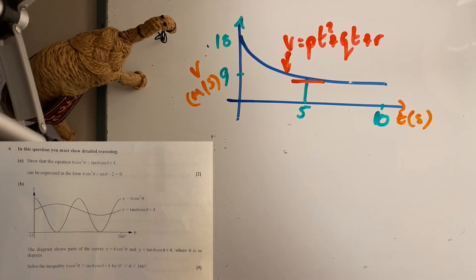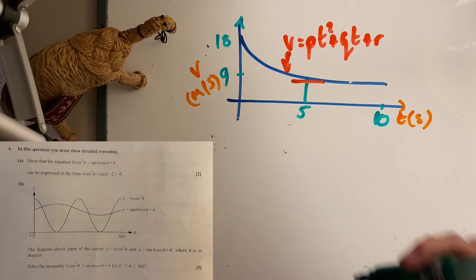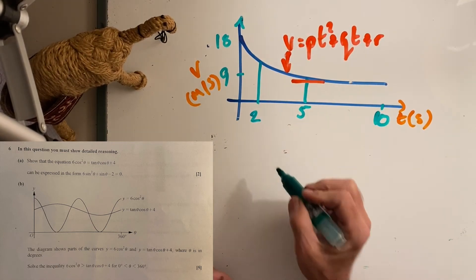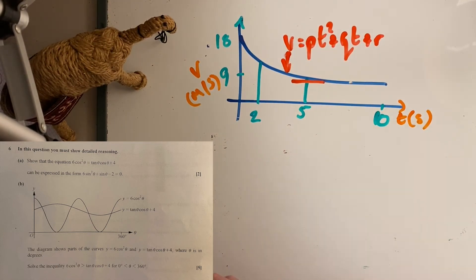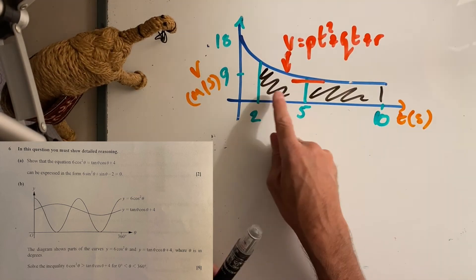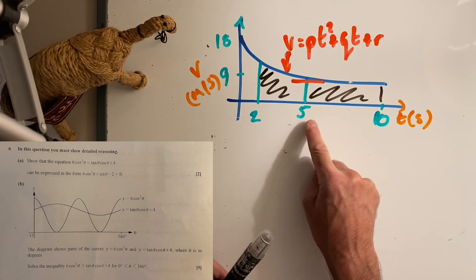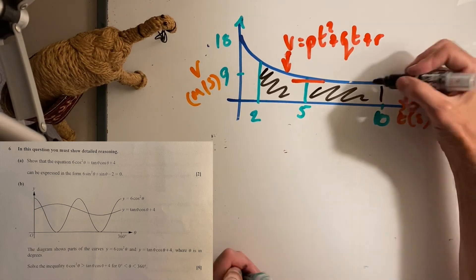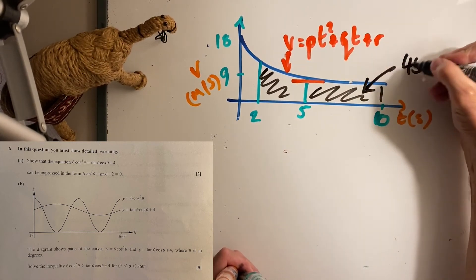Part b says calculate the distance traveled between 2 seconds and 10. Distance traveled is the area underneath. There are two parts here. This one is 5 times 9, so that area is 45 meters. You'll probably get a mark just for that.